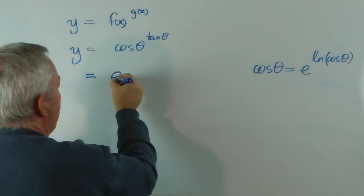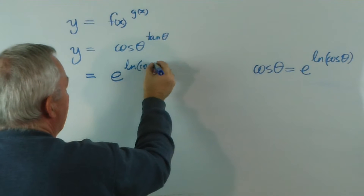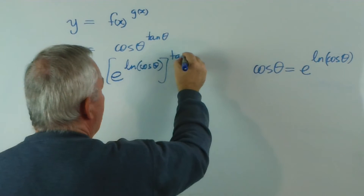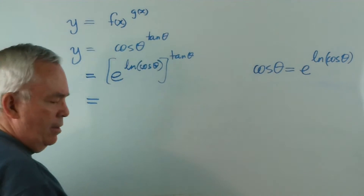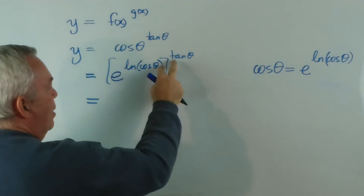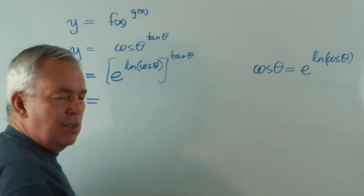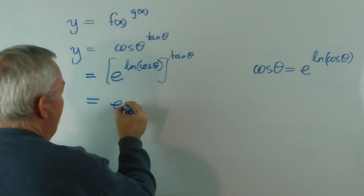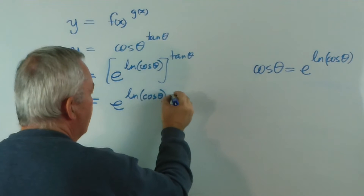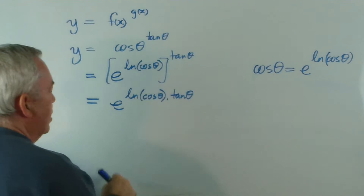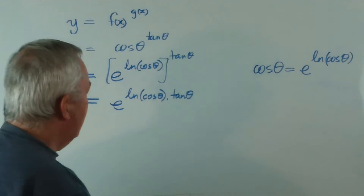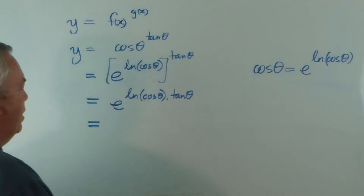We would replace this with e to the log of cos θ, and of course this would be to the power tan θ. But we have a simplifying step here: when we have a power of a power of something, the two powers or indices are multiplied. That makes life a little bit easier. So we have e to the logarithm of cos θ times tan θ — an exponential with a product in the exponent.